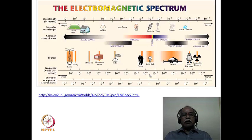Here is an electromagnetic spectrum showing various frequencies and energies of photons in the different regions. The regions are labeled as radio waves, microwaves, infrared waves, the visible region, ultraviolet region, soft and hard x-rays, and finally the most energetic gamma rays on the right-hand side of the spectrum.